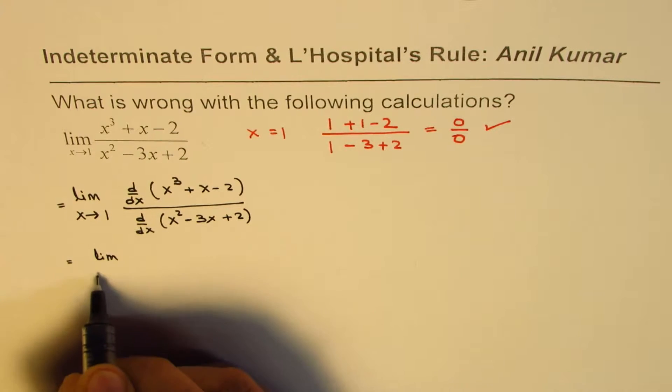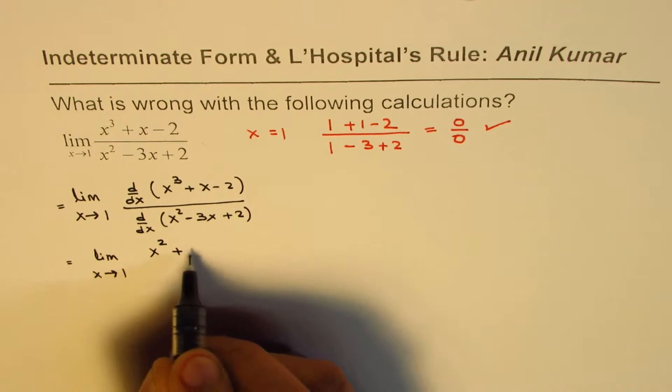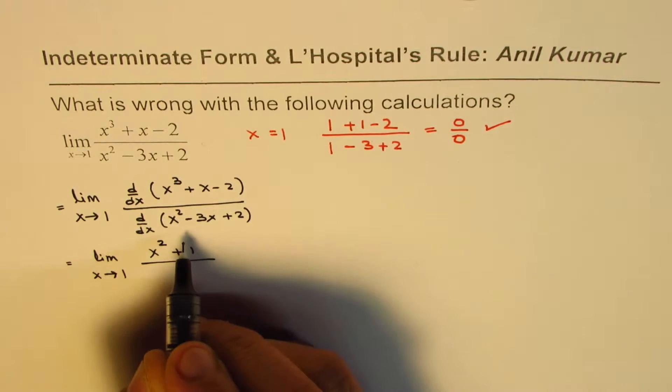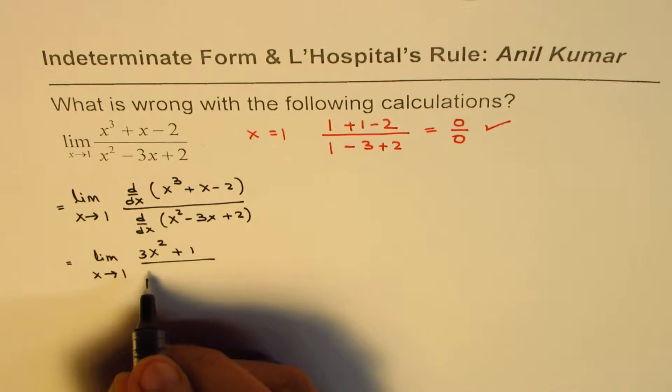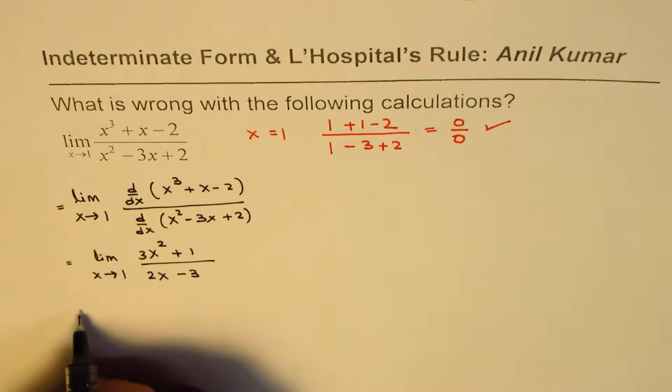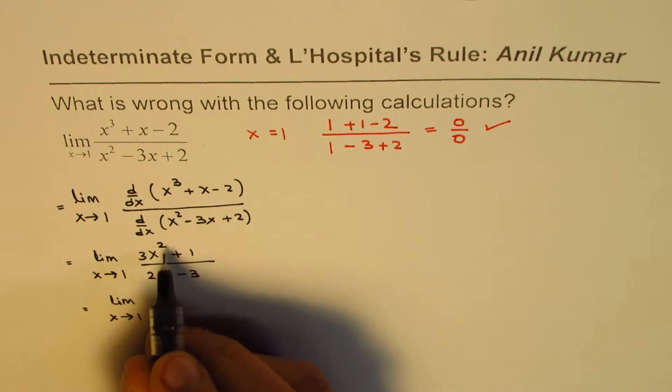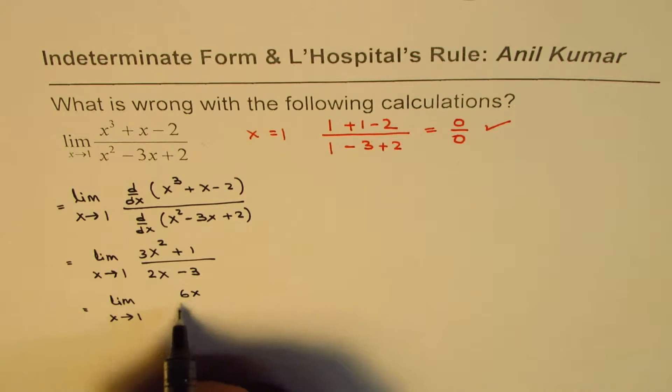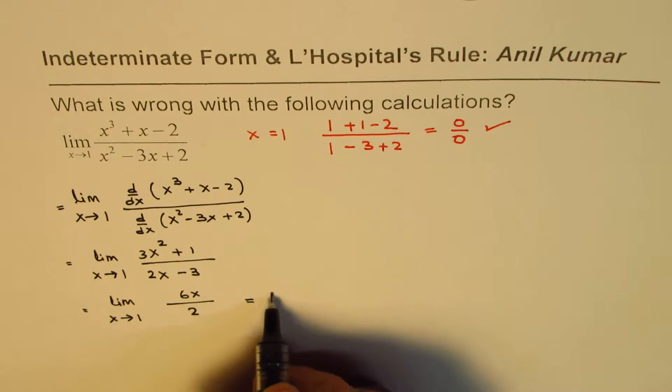That gives us limit x approaches 1, the derivative is 3x² + 1, and the derivative here will be 2x - 3. Now if you again apply L'Hospital's rule, we get limit x approaches 1, derivative is 6x divided by 2. At this stage if I substitute 1, I get 6 over 2 or 3 as my answer.